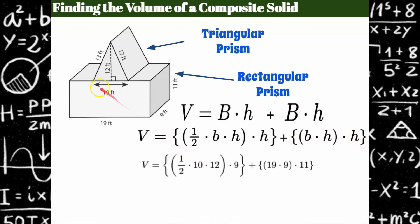We identify the height and base of the triangular face — a height of 12 which is perpendicular to the base of 10 — and then the height of the prism connects the two triangular faces, and we get that from down here: 9, 9, 9. So the height of this triangular prism is 9.